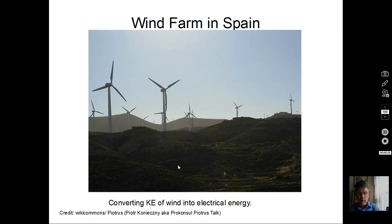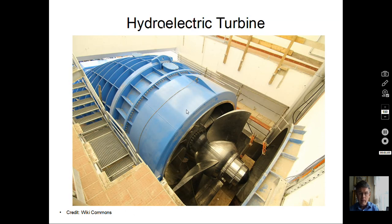One example of electrical generators would be wind-powered generators. Here is a wind farm in Spain, where the wind generators on the poles get up to where the air is moving more rapidly, with more kinetic energy. The kinetic energy of the wind is transferred to kinetic energy of the propellers, and inside there's a moving loop of wire in the presence of a magnetic field that creates electrical current. Another example is hydroelectric turbines, where kinetic energy of water spins a propeller, turning a coil of wire in a magnetic field to induce a current.